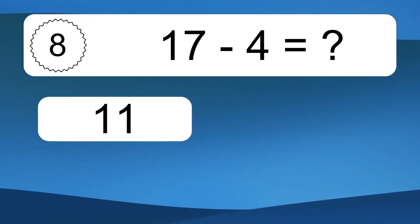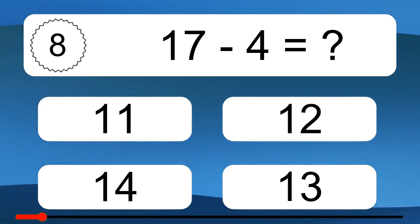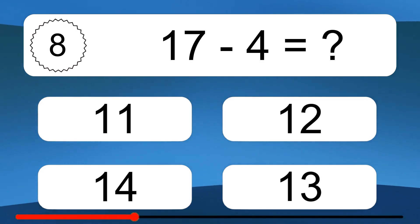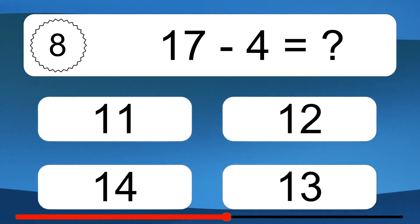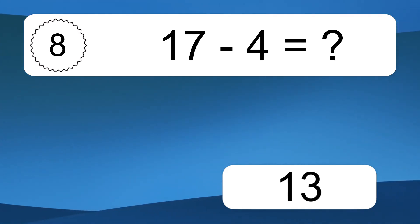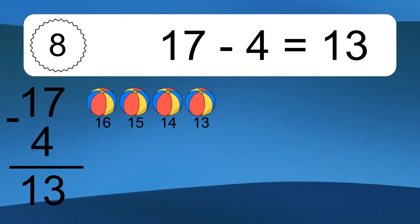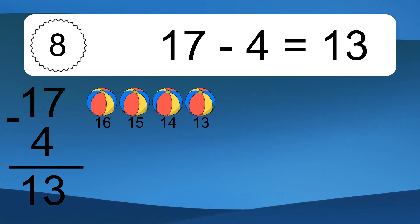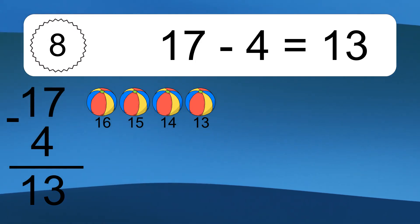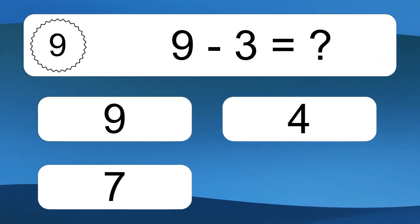17 minus 4 equals what? 17 minus 4 equals 13. Let's count it: 16, 15, 14, 13.